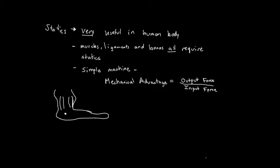We can understand this in terms of an arm. Here's a rough picture of somebody's arm. We have a pivot point — this little joint is roughly your elbow. We have two muscles in the upper arm that control how the arm works. The tricep is the extensor — that's how you loosen your arm, how you release it. And then we have the bicep, which is the flexor — that's how you apply a force to bring your arm up. The forces from these muscles act in two different directions: the tricep force acts to pull the arm down, and the bicep force acts upward.